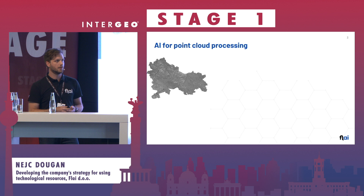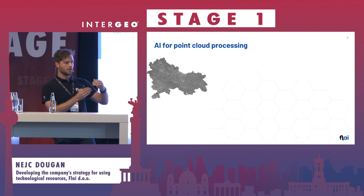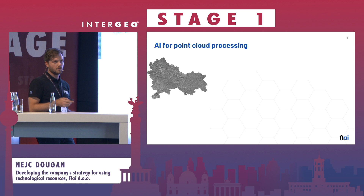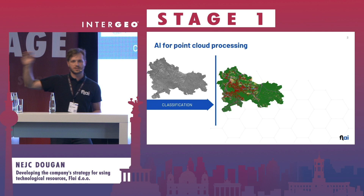Another thing to consider is that depending on the sensor manufacturer and the quality of the point cloud — how much scattering or noise is in the point cloud — it also influences the quality of the end result. So after we get the raw data, we do the classification, where we basically segment every individual point into the corresponding categories.